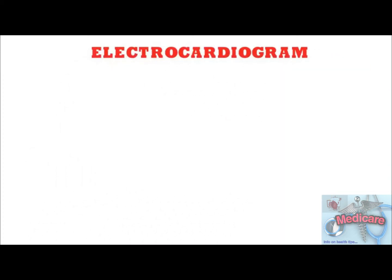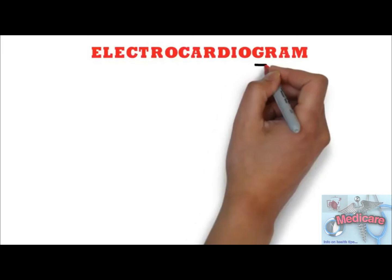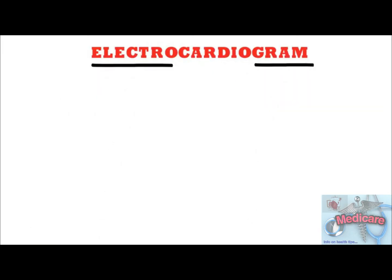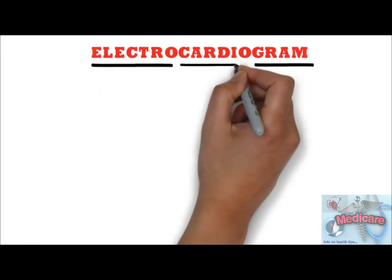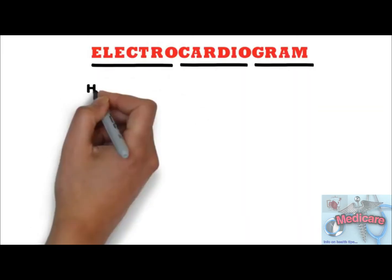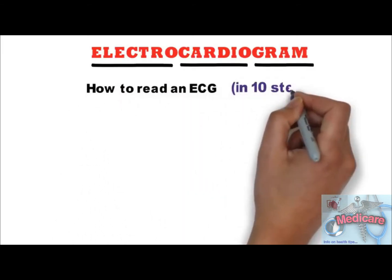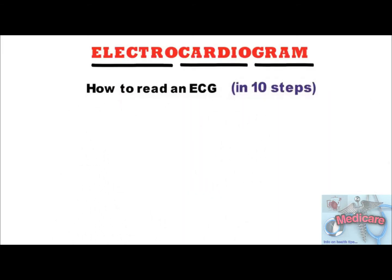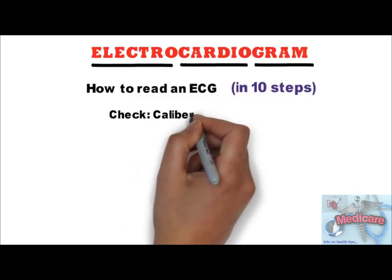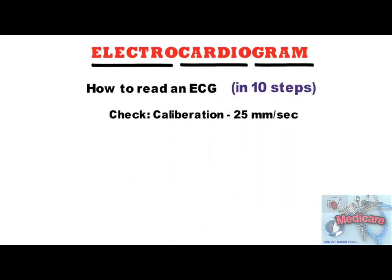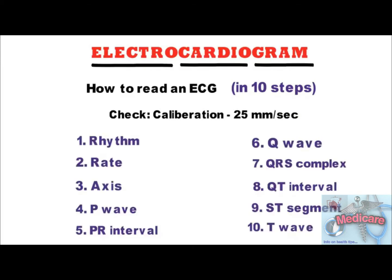ECG, or electrocardiogram, is the graphical representation of electrical activity going on in the heart. Before reading an ECG in 10 steps, we need to check the calibration or speed of the machine, which is normally set at 25 mm per second.